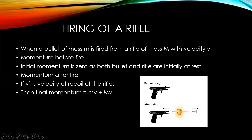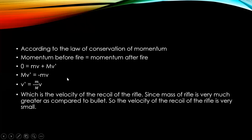The force of the bullet is applied in the forward direction, but the reaction force acts on the rifle or gun in the backward direction. So the velocity of the rifle or gun will be the recoil velocity, which we call V'. We will see the final momentum: small m and v for the bullet moving in the positive x direction, and capital M and V' for the gun moving in the negative x direction. The law of conservation of momentum states that momentum before fire equals momentum after fire.